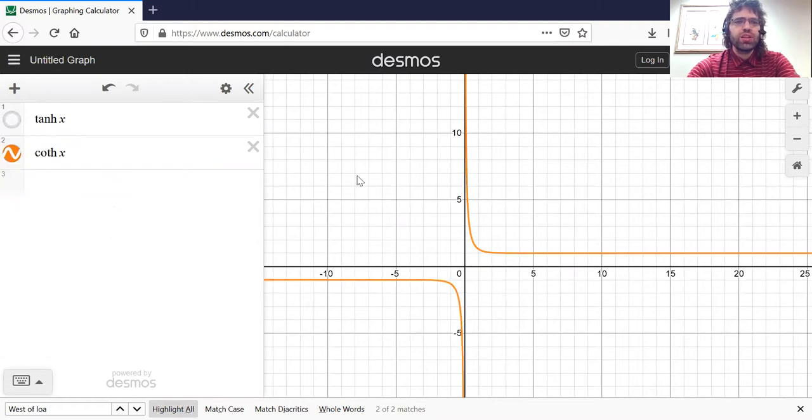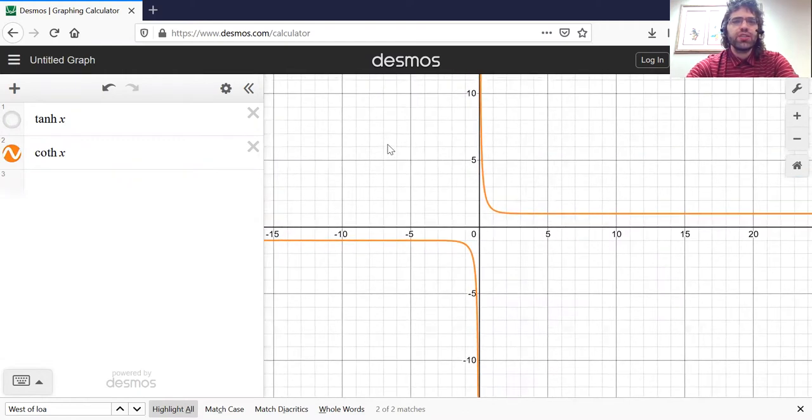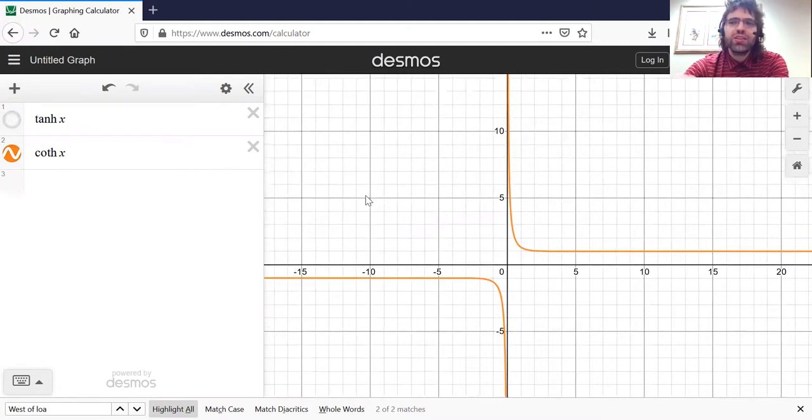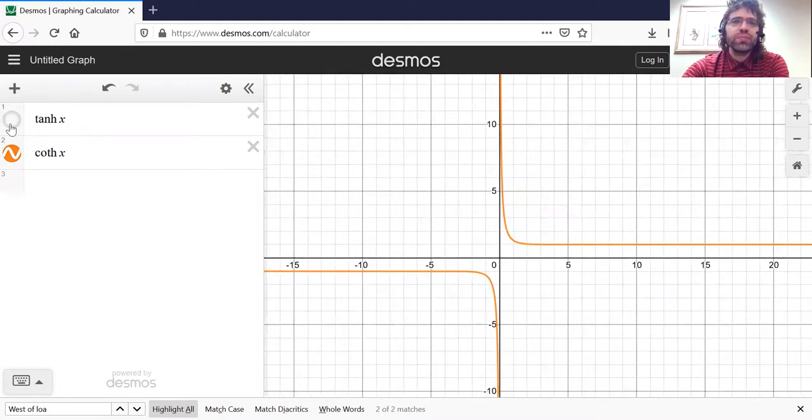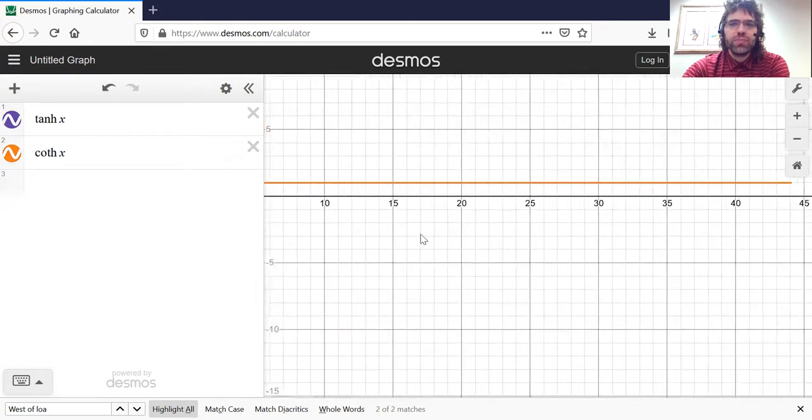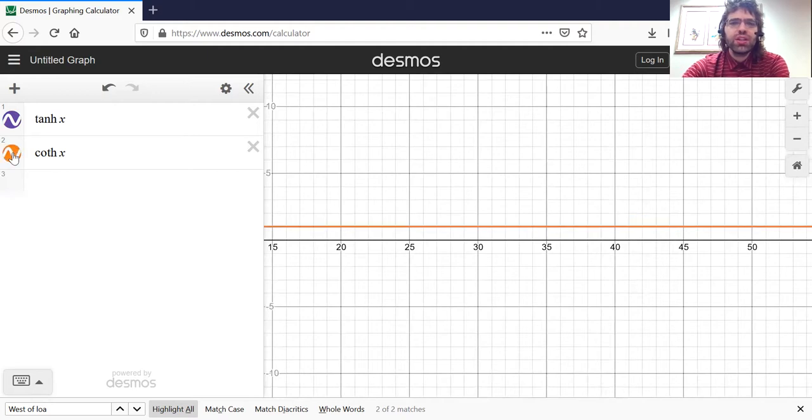You see, here's the hyperbolic cotangent. That being said, having said that they look different, if we look at them both at once, you see that's really only near the origin.